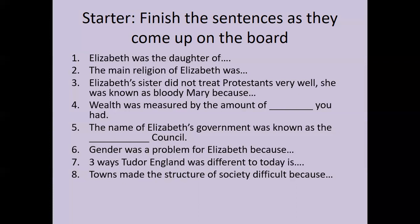Wealth was measured by the amount of land you had. If you were a member of the nobility or gentry you had a much easier life, born into wealth. A yeoman was a skilled individual who had a small bit of land. However, if you were a tenant farmer or anyone lower, life would have been a daily struggle. The name of Elizabeth's government was the privy council, dominated by men — which links to gender being a problem for Elizabeth, since men always dominated society and had been at the top of the hierarchy.